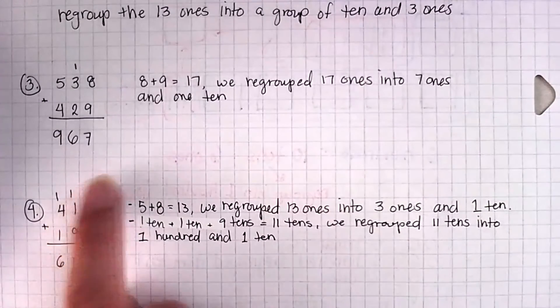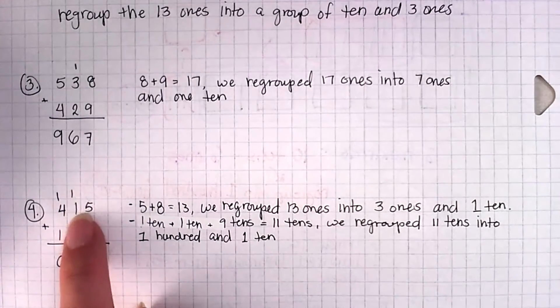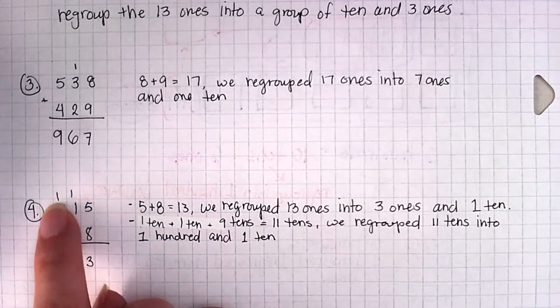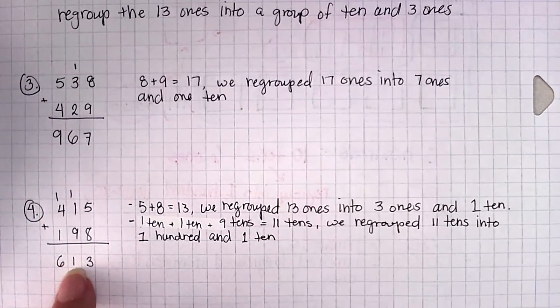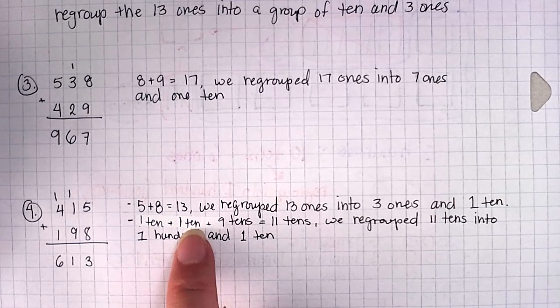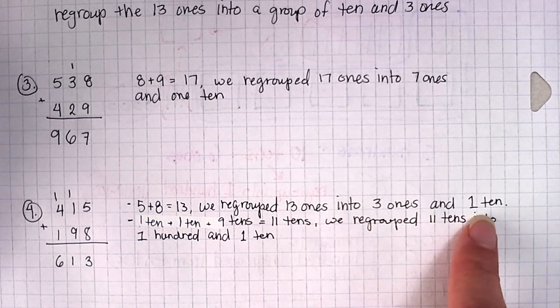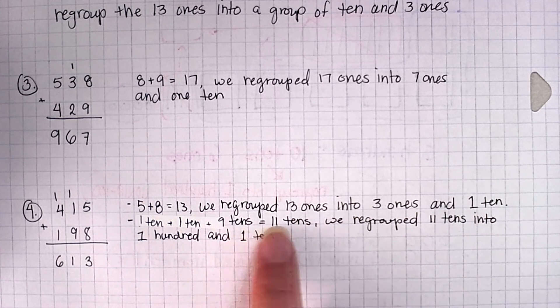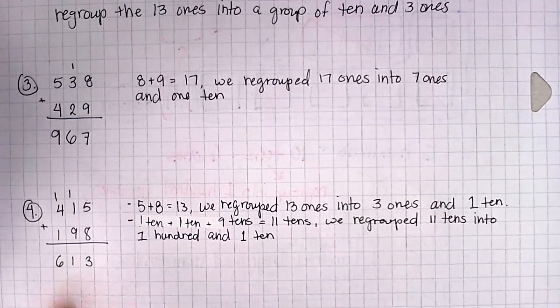Now for number 4, over here we're going to start again in the ones place. 5 plus 8 is 13. So I'm going to keep my 3 ones and carry my 10 over onto the 10 side. 1 plus 1 is 2, plus 9 is 11. So 11 tens. So I'm going to keep one of those tens and carry over the 100, the 10 group of tens that we moved over here. So 11, I'm going to put the 1 here and carry the other one here. 4 plus 1 is 5, plus another one is 6. 5 plus 8 is 13. So we regrouped the 13 ones into 3 ones and 1 ten. And then we had 1 ten plus 1 ten plus 9 tens gave us 11 tens. So we regrouped those 11 tens into 100 and one group of 10. And then we were able to finish our addition.